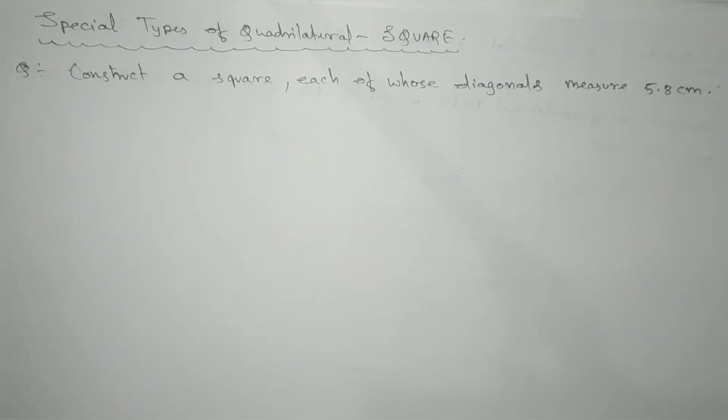The square property is that diagonals bisect each other at 90 degrees, and the diagonals are equal to one another.